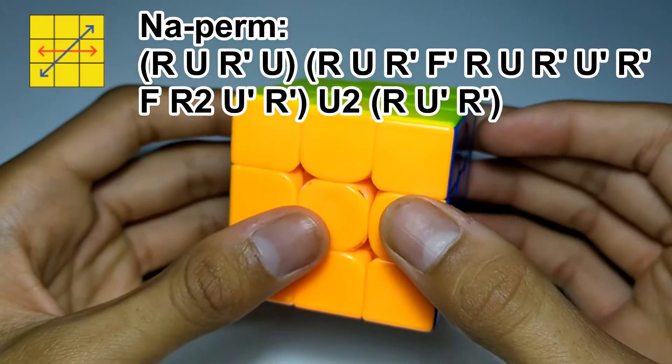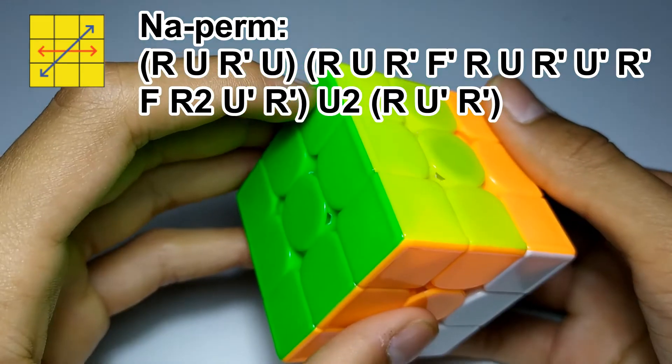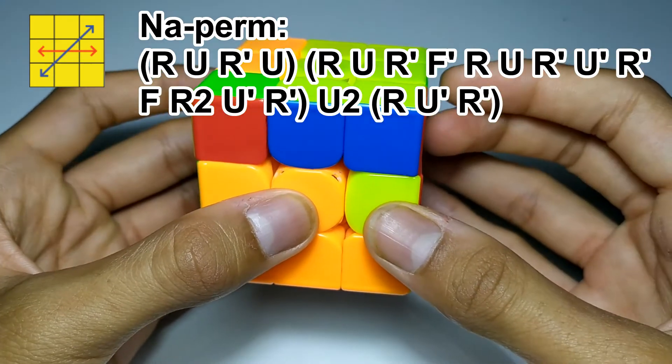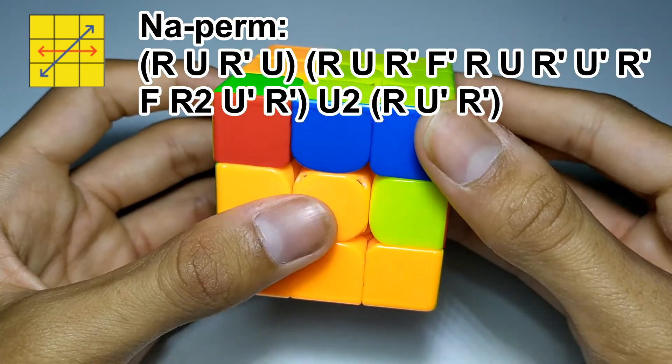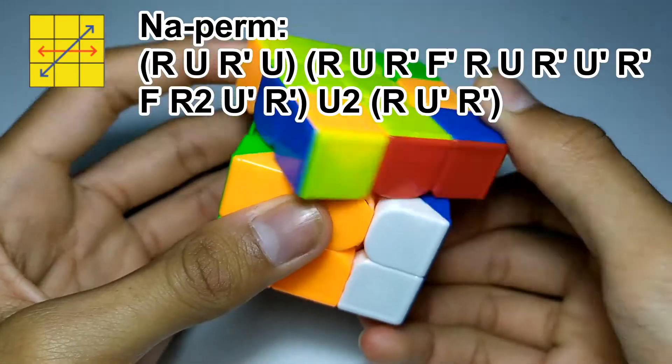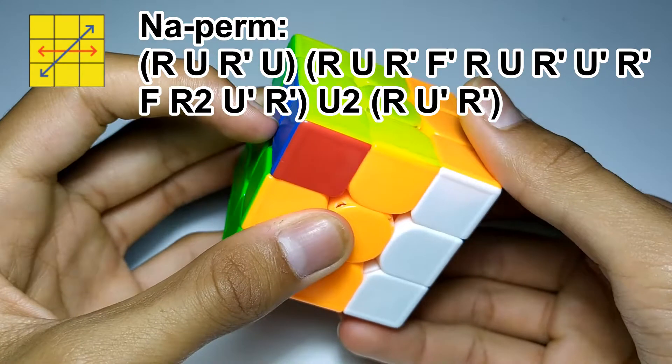But the more advanced way of finger-tricking this algorithm is by starting with R, and then U as a push. R' U, and then the J-B-perm, the more advanced way. And then U2, R, U', R'.